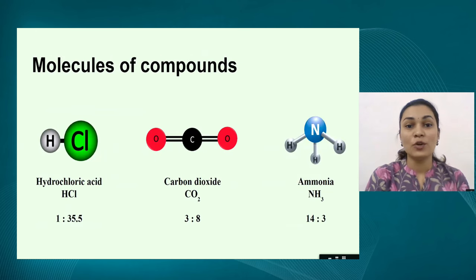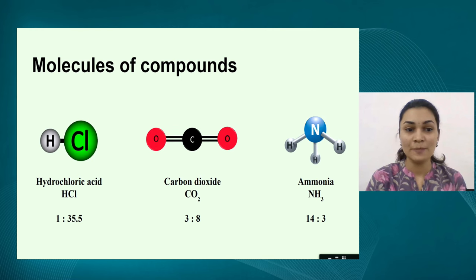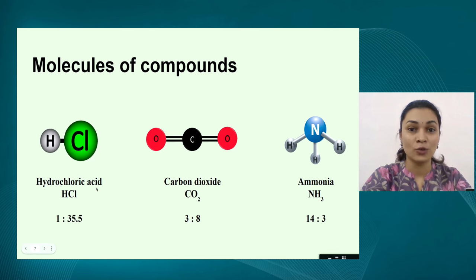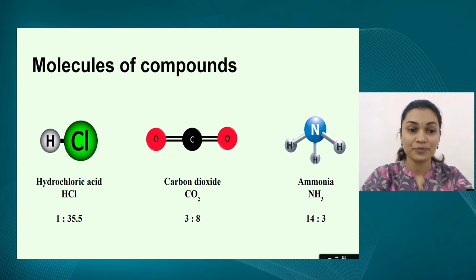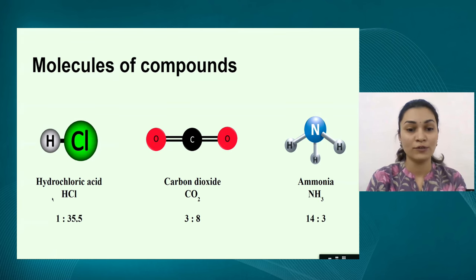Now we were looking at molecules made up of the same kind of elements, but molecules can also be formed of atoms of different elements. The first example is hydrochloric acid — a very common acid used in our laboratories, homes, and industries. It is made up of one hydrogen atom and one chlorine atom. This molecule made up of two different atoms is hydrochloric acid, also written as HCl in symbolic form.